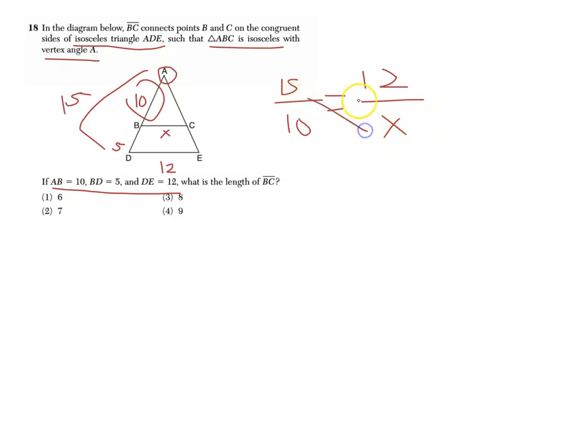If you just cross multiply here we get 10 times 12, which is 120, equals 15 times x, which is 15x. Now if we just isolate the x, divide everything by 15. 120 divided by 15 is 8, so the answer is number 3.